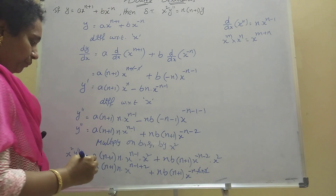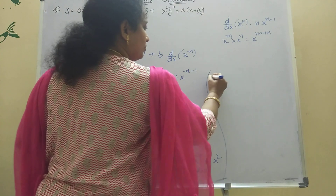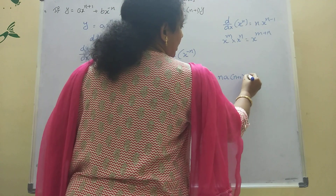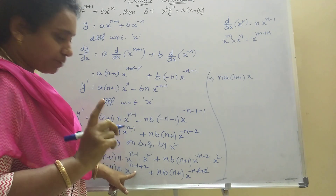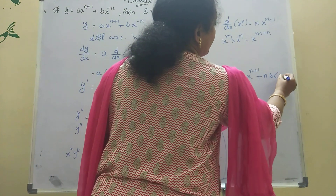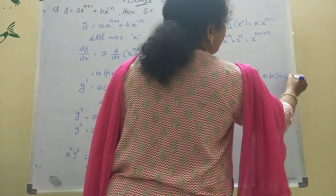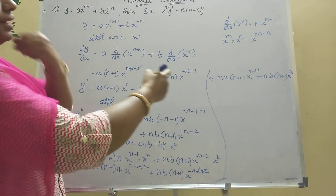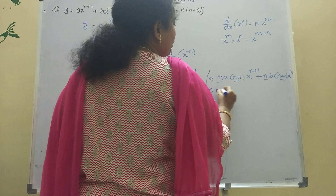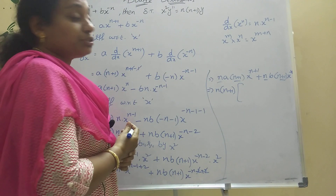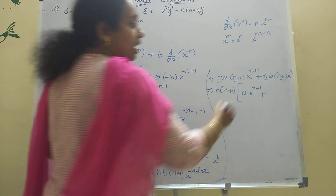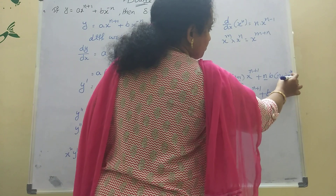After simplifying the powers, the −2 and +2 cancel, giving: x²·y'' = a·n·(n+1)·x^(n+1) + n·b·(n+1)·x^(-n). Now taking n·(n+1) as common from both terms: x²·y'' = n·(n+1)·[a·x^(n+1) + b·x^(-n)].